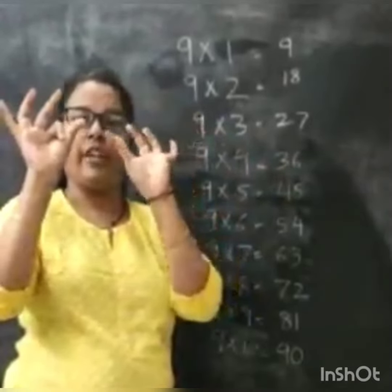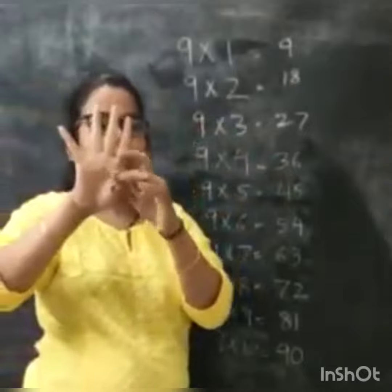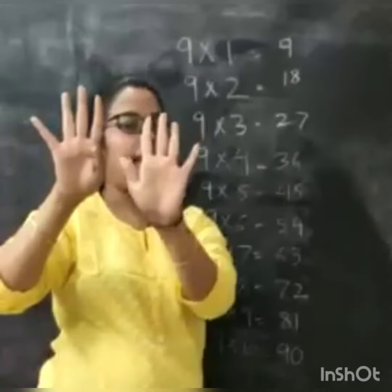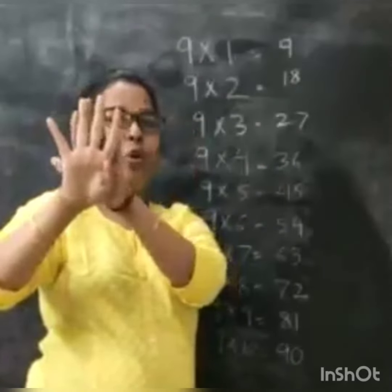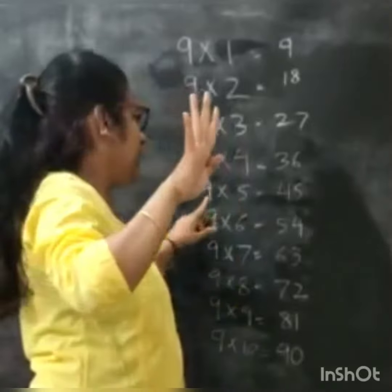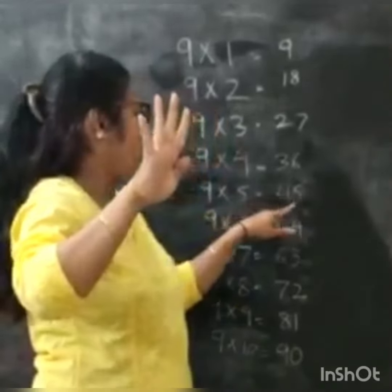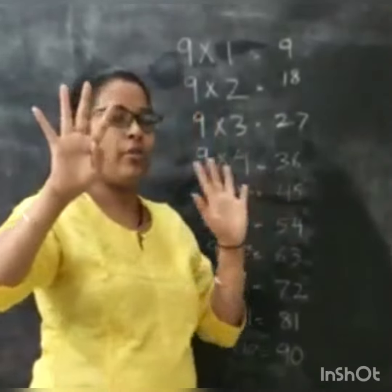Now I will close my fifth finger. So 4 over here and 5 over here. So 9 times 5 is 45.